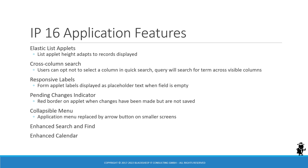In IP16 and higher, you will notice a subtle red border on applets when changes have been made by the user but are not yet saved — this is called the pending changes indicator. The application menu is replaced by an arrow button, which is only visible on smaller screens; when the screen is small, the menu is collapsed and you can use the arrow button to expand it. Additionally, IP16 introduced enhancements for the search and find feature as well as the calendar. If you plan to upgrade from versions prior to IP16, be ready for these changes and educate your teams and end users.